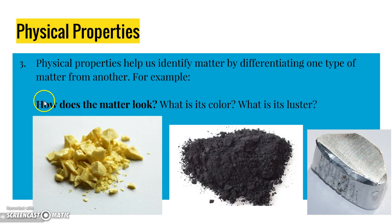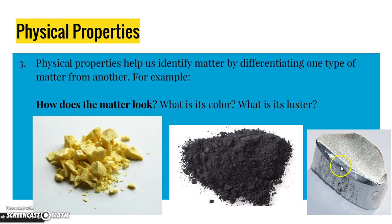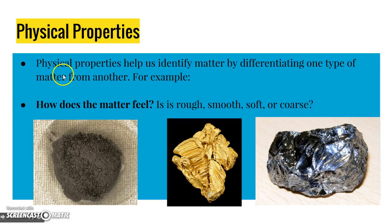Physical properties help us identify matter by differentiating one type of matter from another. For example, how does the matter look? What's its color and what's its luster? Different matter has different colors or different lusters. See, this one's shiny, these are dull. There's number three for your homework paper.